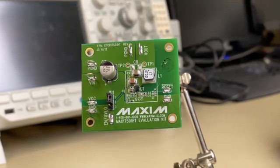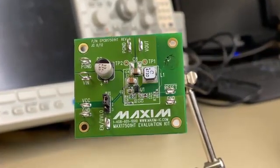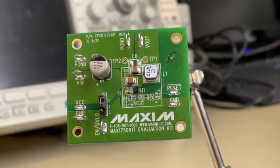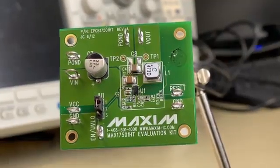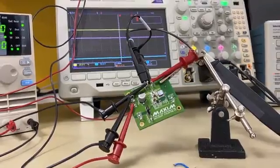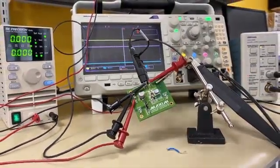MAX17501 HTEV kit accepts input voltage from 4.5 to 60 volts and outputs 2.5 volts at 500 milliamps. The link to MAX17501 HTEV kit can be seen on the screen. The capacitor at the soft start pin is replaced with different values and inrush current is captured using current probe and oscilloscope.